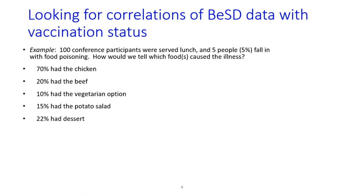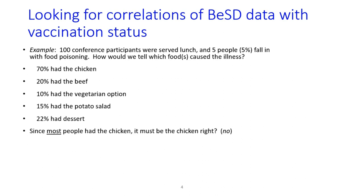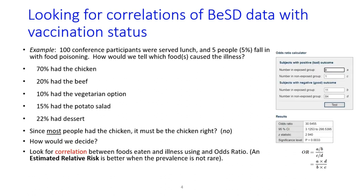How would we decide? The traditional way is to look for correlation between the foods eaten and illness using an odds ratio. If four out of 15 people who ate potato salad got sick, but only one of the 85 people who did not eat it got sick, that would help make the case for the potato salad. You would do the same calculation for all foods, of course. In this case, people who ate the potato salad were 30 times more likely to become ill — highly statistically significant with a p-value of 0.003.